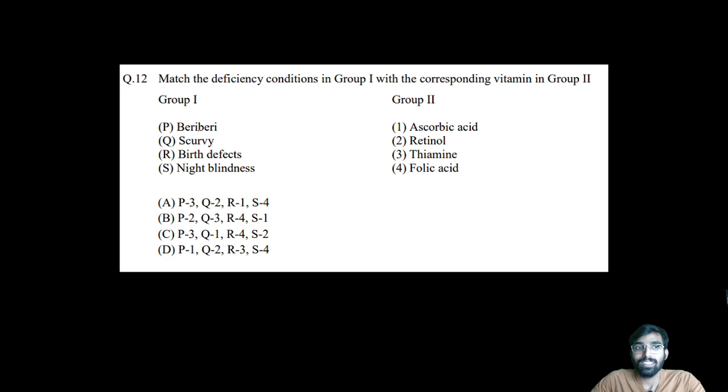Question number four: Match the deficiency condition in group one with the corresponding vitamin in group two. First one is beriberi, then scurvy, then birth defect, and night blindness. Night blindness is vitamin A, that is retinol, so S2. Birth defect is basically due to folic acid, R4. Scurvy we all know is vitamin C, and beriberi is due to thiamine, so P3, Q1, R4, S2. The correct option is C.